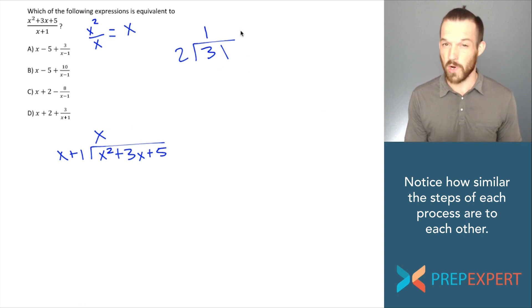Now back to old school division. What do I do with that 1 that I just found? I take it and multiply it by my divisor 2. 1 times 2 is 2. I write the product just below the 3. Back to polynomial division, I do the same thing. I take that x that I just found and multiply it by my whole divisor, x plus 1. And what do I get? x times x plus 1 is x squared plus x.